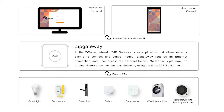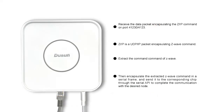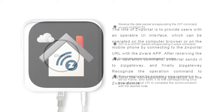The network structure diagram is as follows. The main function of ZIP Gateway is receiving data packets encapsulating ZIP commands on port 4123. ZIP is a UDP IP packet encapsulating Z-Wave commands, extracting the Z-Wave command, then encapsulating the extracted Z-Wave command in a serial frame, and sending it to the corresponding chip through the serial API to complete communication with the desired node.